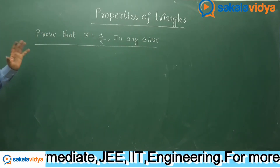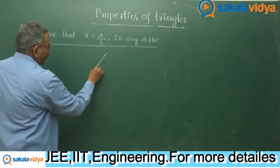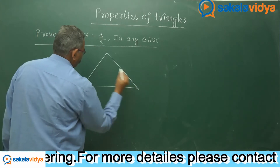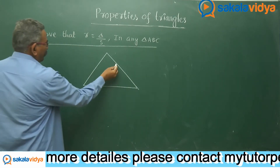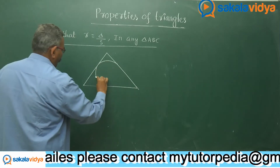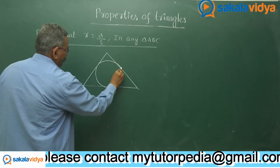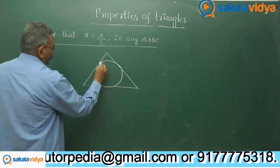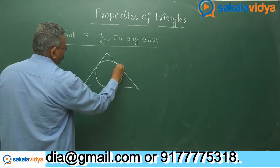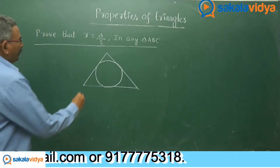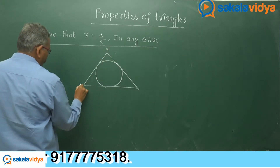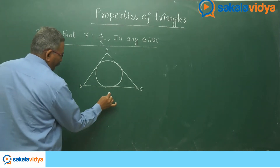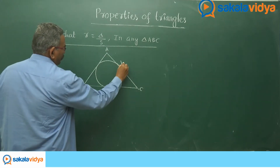Now let us consider a triangle and take its incircle. This is the incircle. Let us say the vertices are A, B, and C. The opposite sides are small a, small b, and small c respectively.